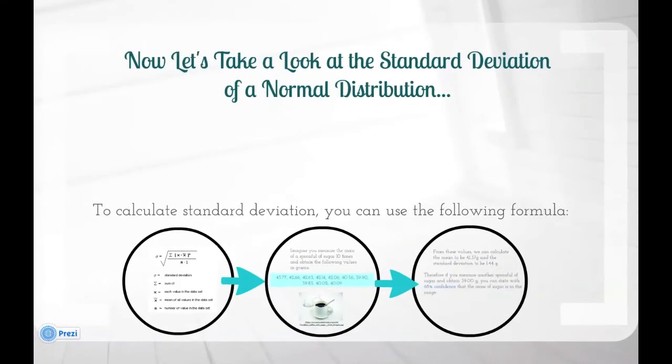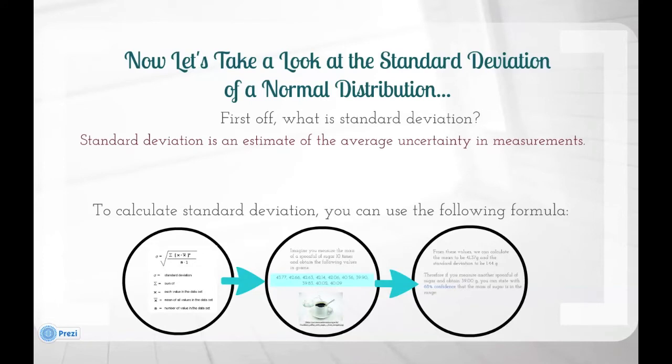Now let's take a look at the standard deviation of a normal distribution. First off, what is standard deviation? Standard deviation is an estimate of the average uncertainty in measurements.